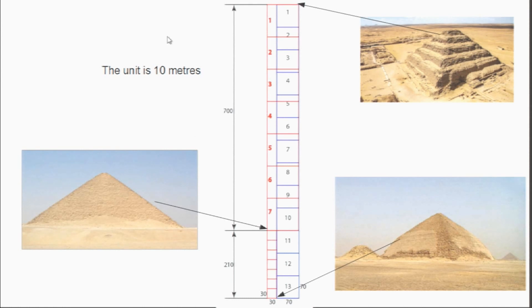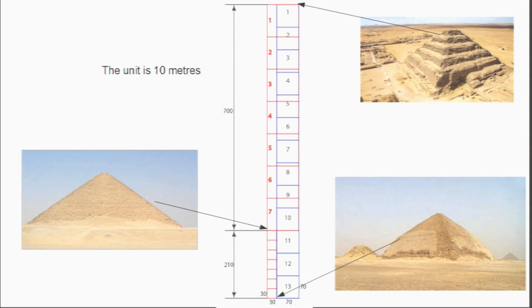The Saqqara pyramid is in this corner, the red pyramid is exactly here at its center, and the bent pyramid is at this spot with its southern base. These three pyramids are positioned to perfectly indicate this geometry. The unit is 10 meters. So where we read 70, 30, 210, 700 — this is 7,000 meters, 2,100 meters, et cetera.